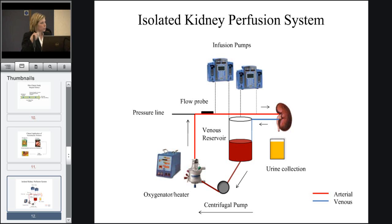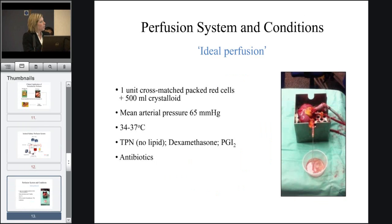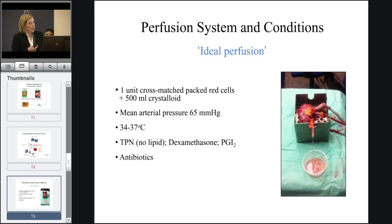By restoring flow to the kidney, the kidney will actually start to produce some urine. In designing this, we wanted to create what we term the ideal perfusion conditions. We use one unit of cross-matched packed red blood cells diluted with a crystalloid solution. We keep it at just below mean arterial pressure, and temperature just below normal. We add a nutrient solution to the kidney, and protective agents such as dexamethasone, which is an anti-inflammatory, a vasodilator, and also some antibiotics.